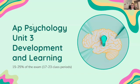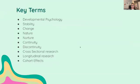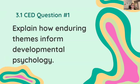We're going to start with 3.1, and this theme is themes and methods in developmental psychology. We're going to look at some key terms, and as usual, I'm going to make a separate video with the definitions and real life examples for each of the key terms that go with this section of Unit 3.